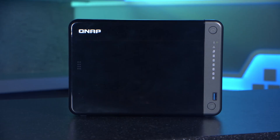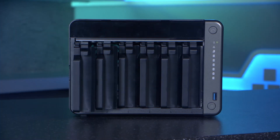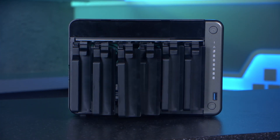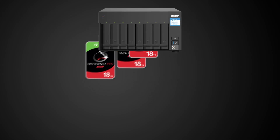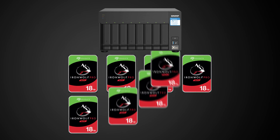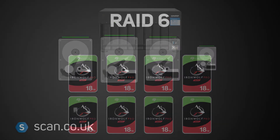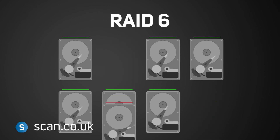anywhere in the world with an internet connection. Units with more bays can store more content, and they're sold both empty and with hard disks included. You can set up your NAS in a variety of ways to allow maximum possible storage, or for extra security with a RAID setup to duplicate important data across more than one hard disk, so that if one fails, your data is still safe.